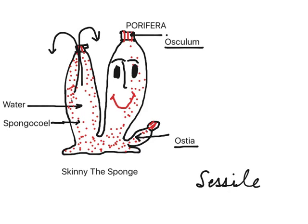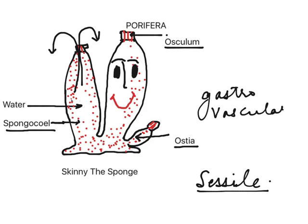If they are sessile, then how do they eat? How do they meet the requirement of gases? How do they excrete wastes? It is through the water canal system, which is unique to them. In this diagram you can see a spongocoel, which is essentially a gastrovascular cavity. We should not confuse it with the body cavity, because this primarily refers to the digestive and circulatory cavity.